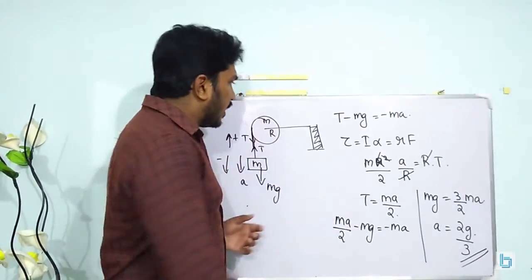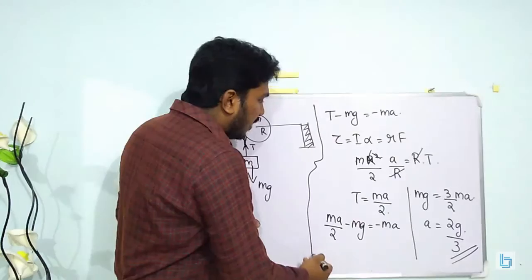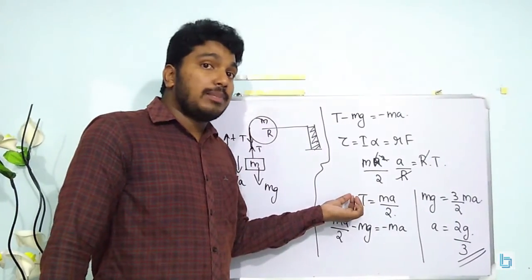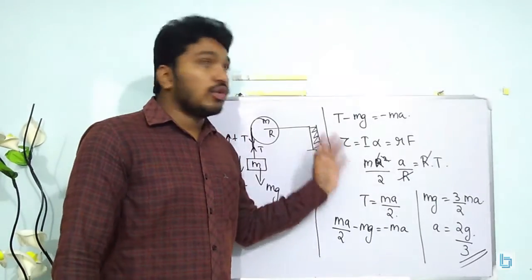Now, this is a very important question and sometimes some values may be given there and this is a previous question which has appeared in JE mains and also for Keyans.